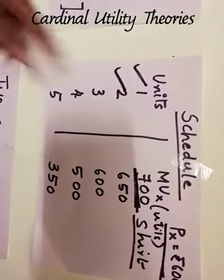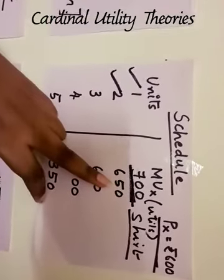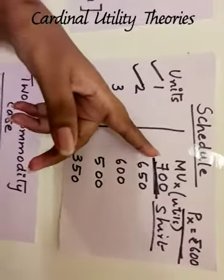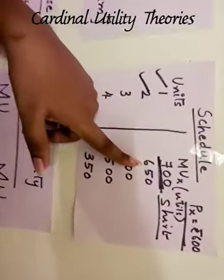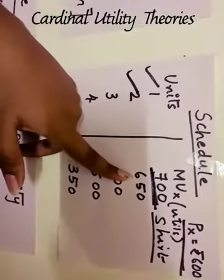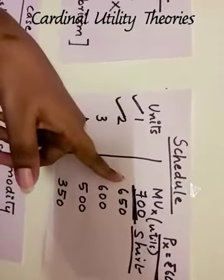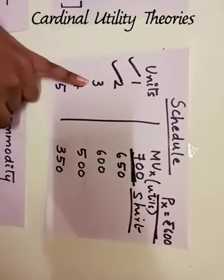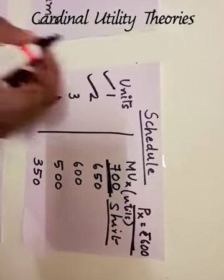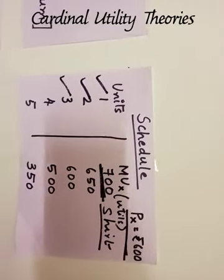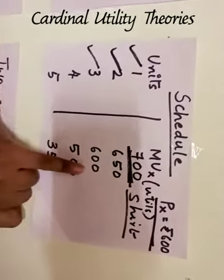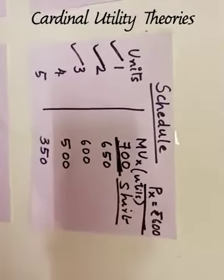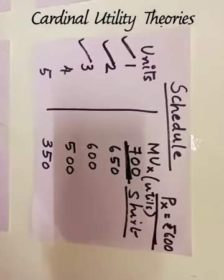In the second month he gets his salary and buys one more shirt, but he is not getting the same marginal utility as the first shirt. Still he is getting utility — that is 650. The reduction is 50. Then, third month salary: he purchases another shirt, giving 600 utils of marginal utility. Again, 50 is diminished.